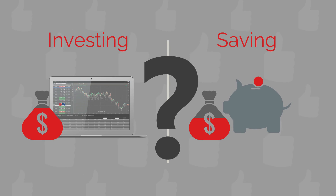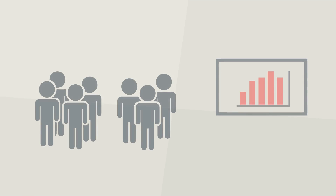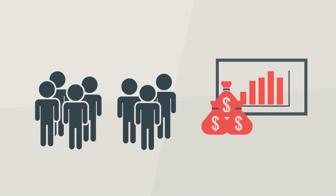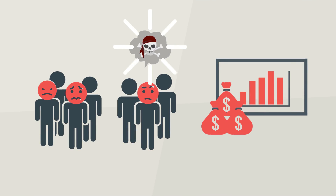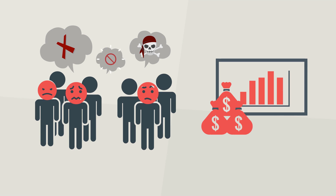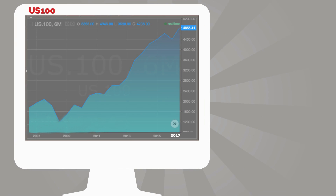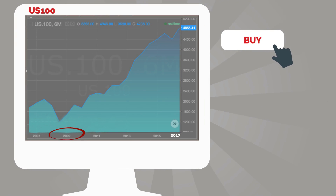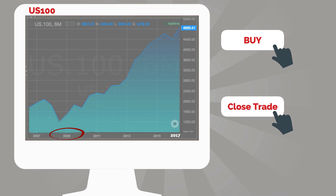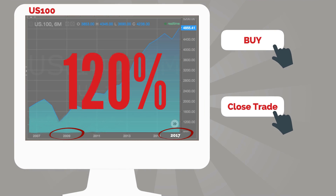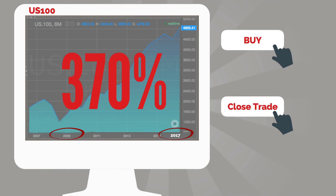But why didn't everybody do that? Well, when people hear about investing in stocks on financial markets, their first thought is a no. It seems too risky and complicated, and there's no time for that. But just think about the following example: a click on Buy U.S. 100 in 2009 and a click on Close Trade Now would have meant 370% profit.